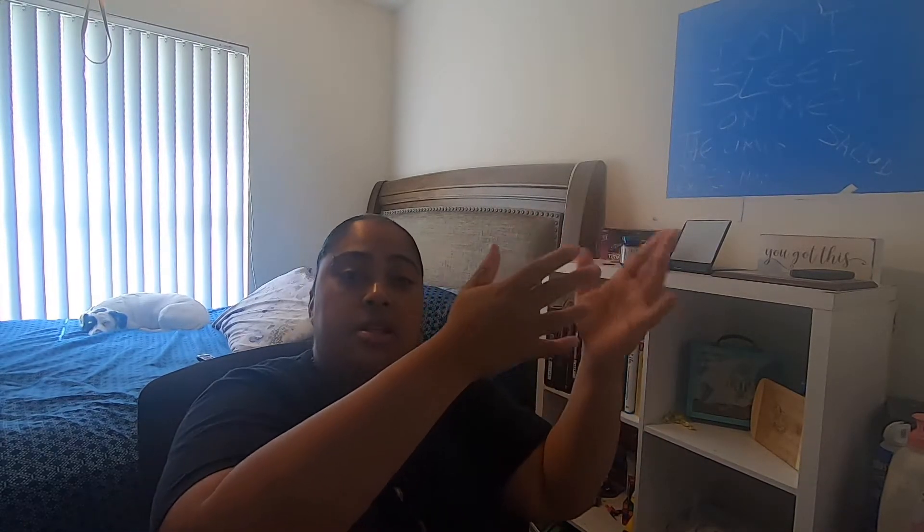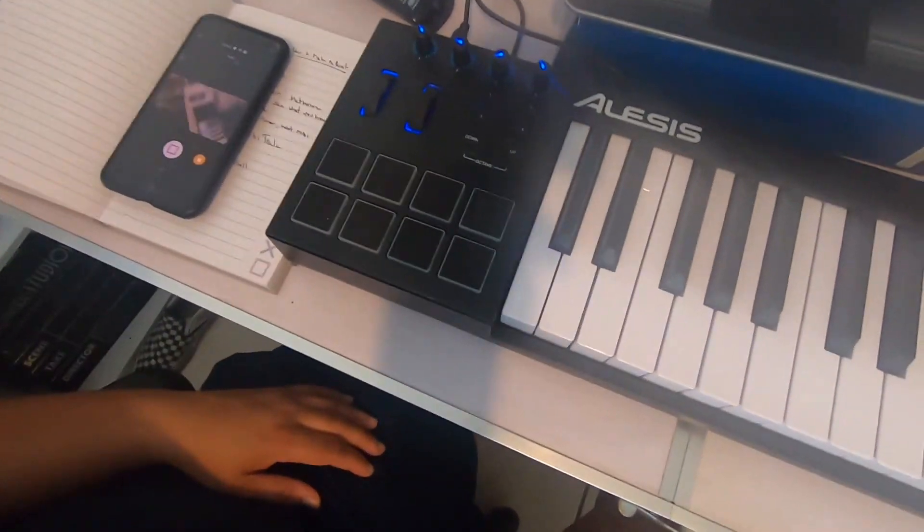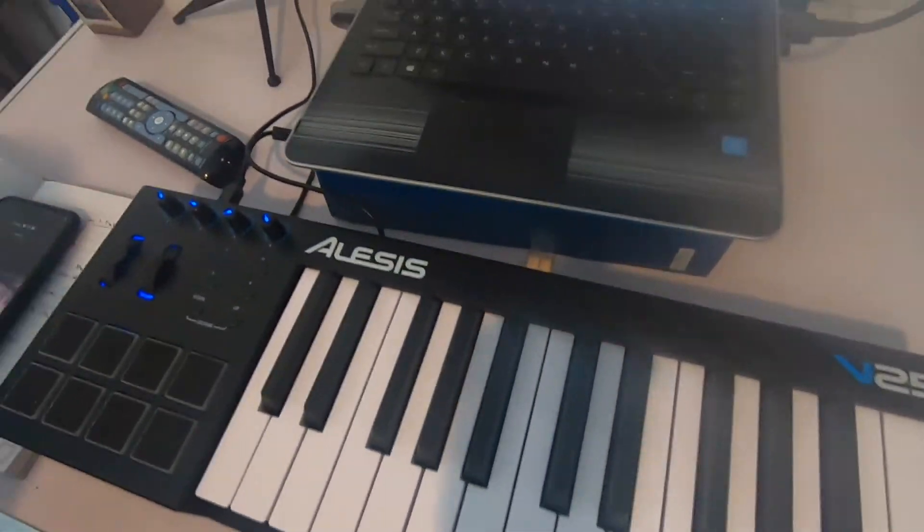What we're going to talk about today is how to make a beat on Ableton Live 10 Lite using a MIDI keyboard. In this case we're using the Alesis V25. What we're going to go over is the concept and process of how to create a beat.